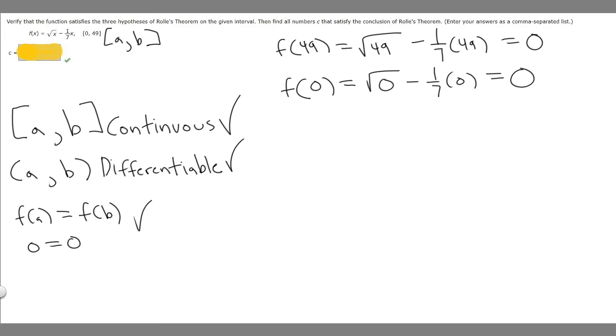So what does Rolle's theorem actually tell us? It tells us that the derivative of our function, so f(c), I'm just replacing it with x, is going to be equal to 0. So basically what we need to do is take the derivative of this function, set it equal to 0, solve for x, and our x value is going to be c.